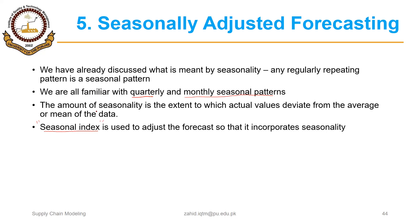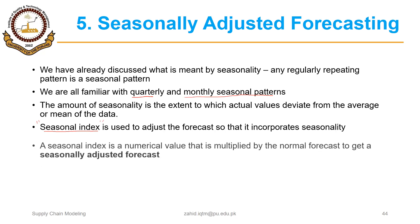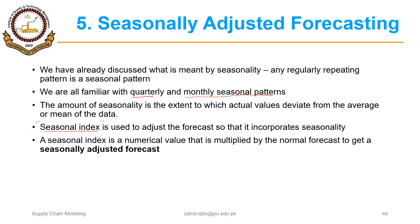The seasonal index is used to adjust the forecast so that it incorporates seasonality. This point is important: we will generally be making forecasts using some other method — maybe one of the methods we have already discussed, either a qualitative forecasting method or one of the quantitative methods — and then we will use the seasonal index to adjust that forecast. A seasonal index is a numerical value that is multiplied by the normal forecast to get a seasonally adjusted forecast.